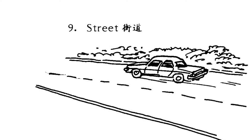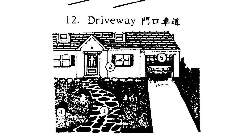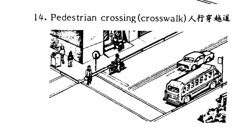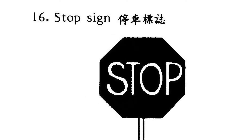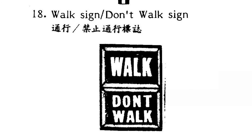Nine, street. Ten, intersection. Eleven, sidewalk. Twelve, driveway. Thirteen, curb. Fourteen, pedestrian crossing. Pedestrian crosswalk. Fifteen, traffic light. Sixteen, stop sign. Seventeen, no parking sign. Eighteen, walk sign. Don't walk sign.